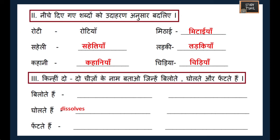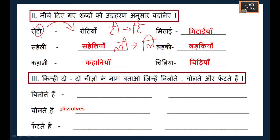One important thing to observe: whenever you get the 'ee' sound in the singular form, when it transforms to plural, the 'ee' sound changes. For example, here 'ti' is changed to 'tee', and similarly 'li' is changed to 'lee'. You should be careful about this pattern when forming plurals.